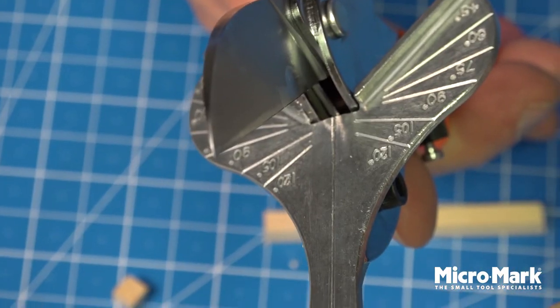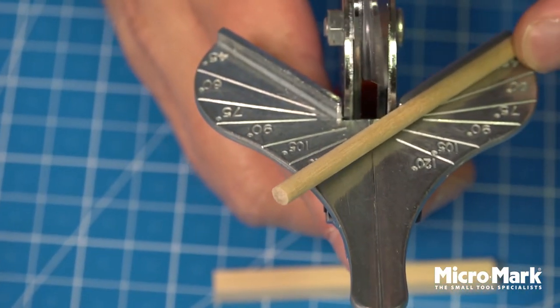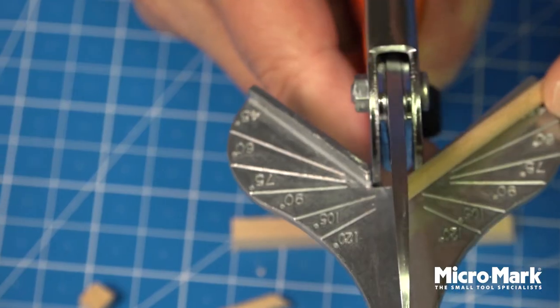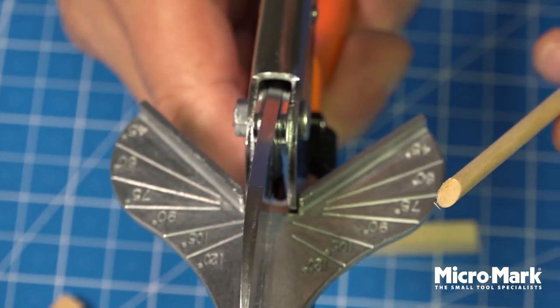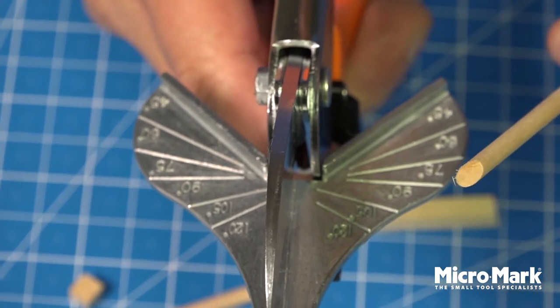And now I have a hardwood dowel in my hand, which I'm going to cut to a 45. Like butter. Nice, clean cut. Practically burr-free.